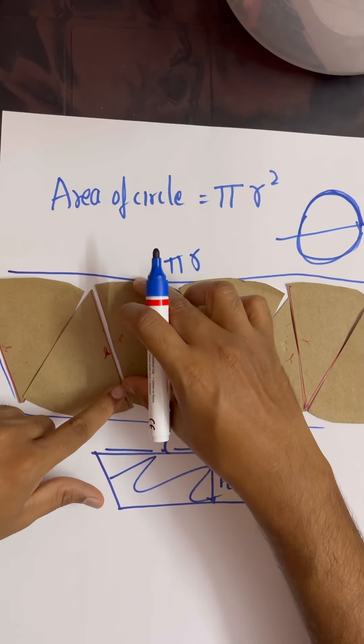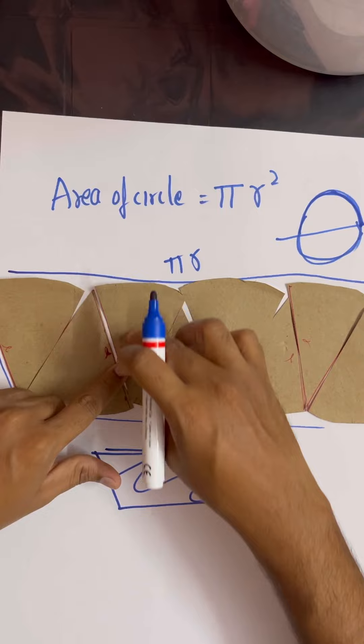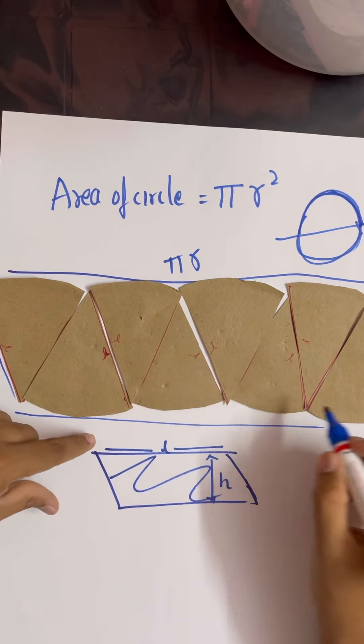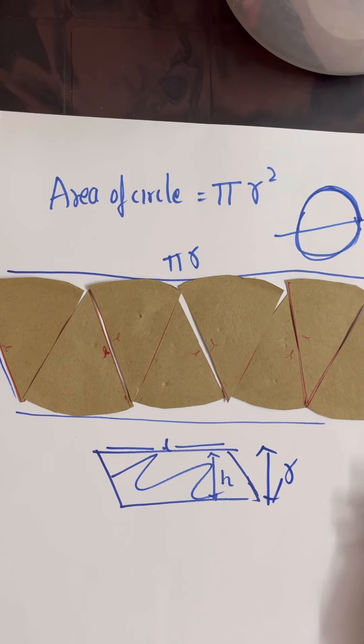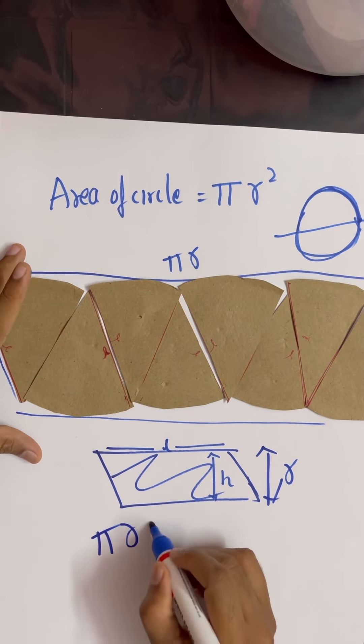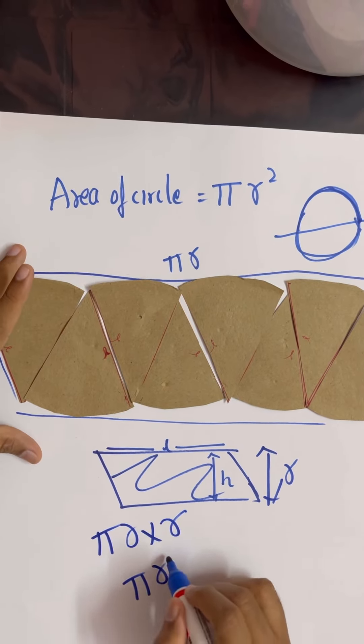It is the radius. So now what is the area of the parallelogram? It is base into height, or length into height. Now πr into r, which becomes πr².